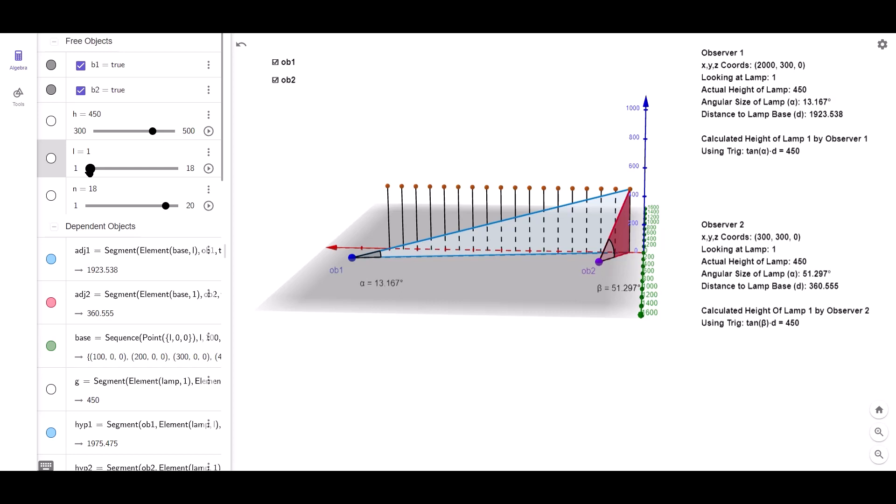But because Mike and Michelle also know their distances to the base of lamp pole number one, they can each calculate how high the lamp is. Mike uses his angle alpha, Michelle uses her angle beta, and both use their own distances from the lamp pole to independently determine the height of the lamp.